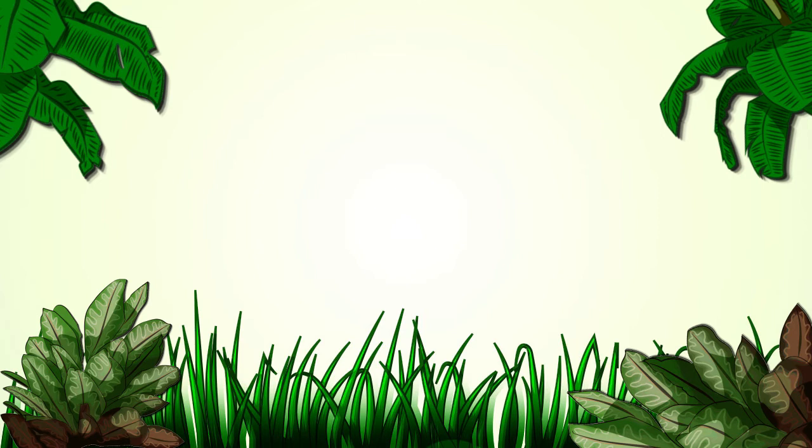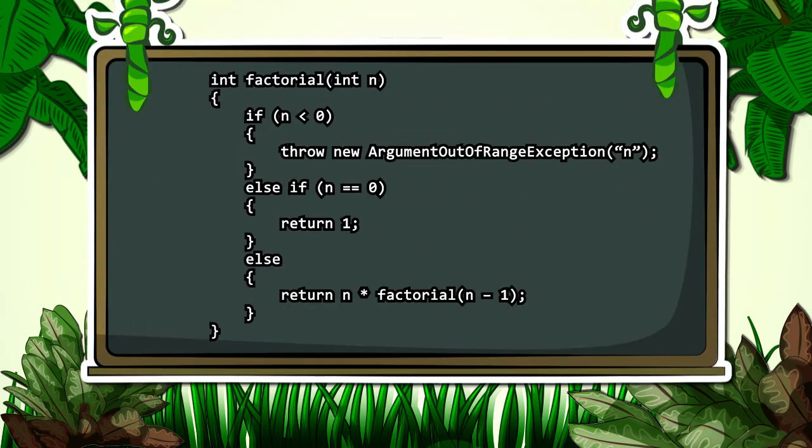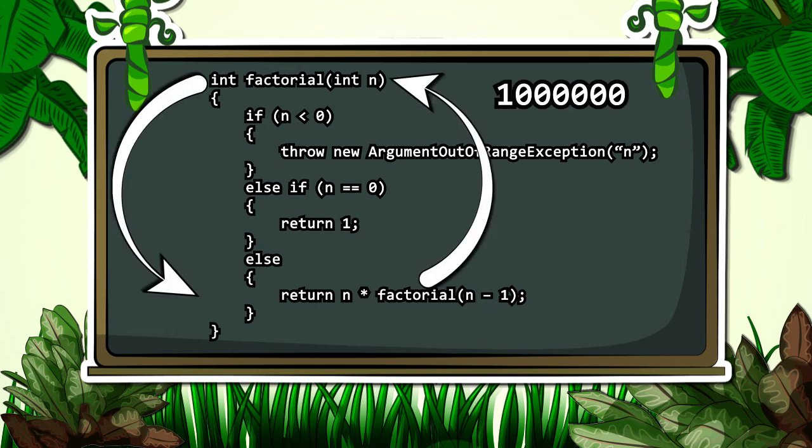What closer means really depends on the situation. In our example, any positive number input into the factorial function calls the factorial function again, passing in a value one less than the value that was passed to it. This happens over and over again, until a zero is passed in. Our base case.